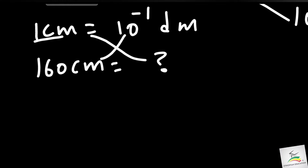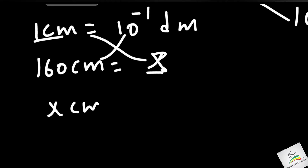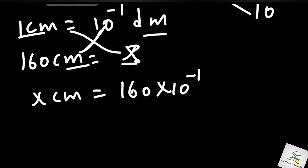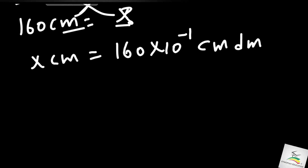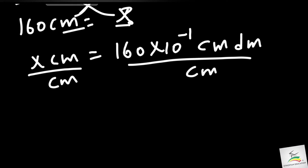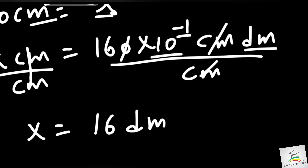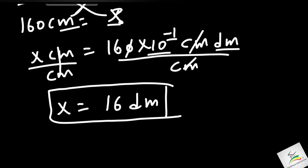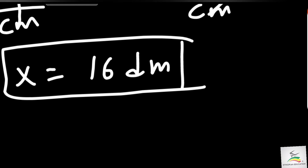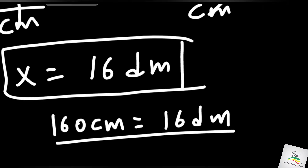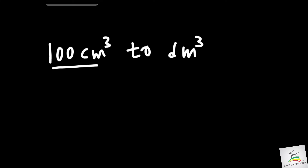Using cross multiplication: x centimeters — we set up the proportion. One centimeter equals ten to the power of minus one decimeters. Cross multiplying gives us x equal to 160 centimeters converted, which gives about 16 decimeters.